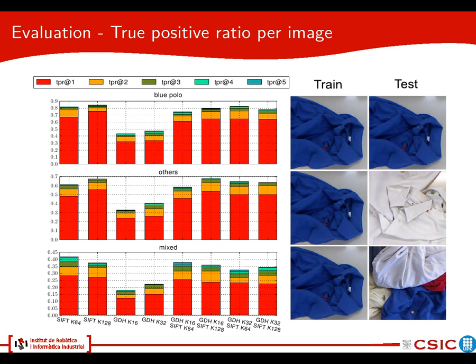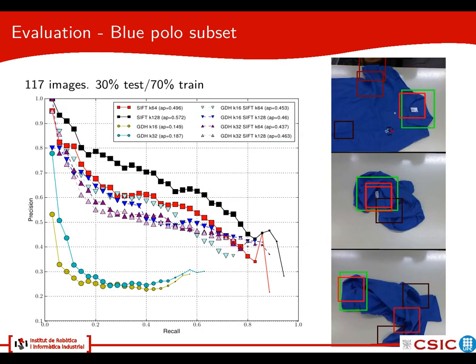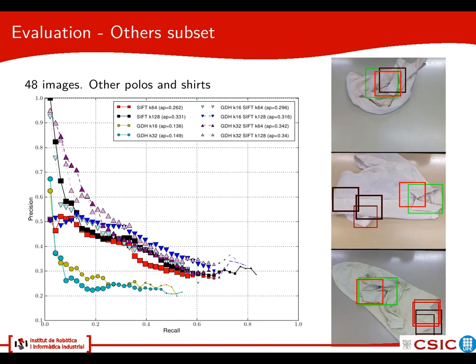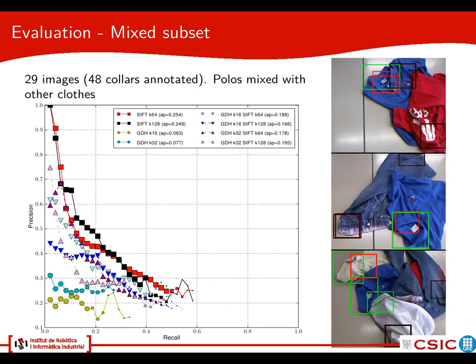However, we are not taking into account precision in this case. Looking at precision-recall curves, we can see that SIFT alone performs better in terms of precision on the blue polo subset. But when we move to the 'others' subset — the ones that don't contain the blue polo — the performance of SIFT alone drops significantly while the combination remains more or less the same, suggesting that using 3D information allows us to generalize better to unseen instances of polos or other clothes with collars. In the mixed subset, all methods perform quite worse due to extra clutter, so the method needs to be made more robust to clutter for practical use.